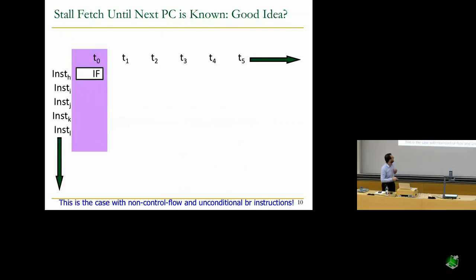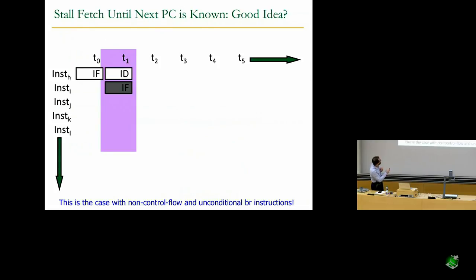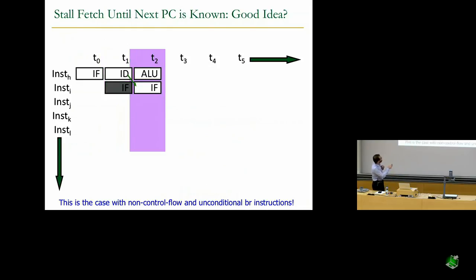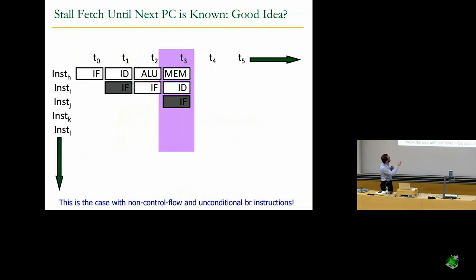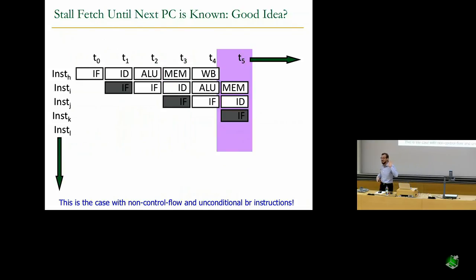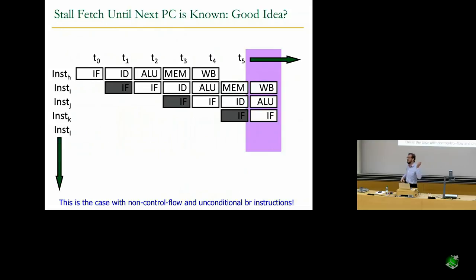Stalling fetch until next PC is known is not a good idea. You really know the next PC after you decode the instruction — you can't even fetch the next instruction because you haven't decoded it yet. Every other cycle you have a bubble. This is a terrible solution — you're operating the pipeline at 50% efficiency maximum.